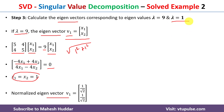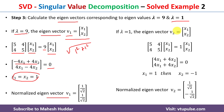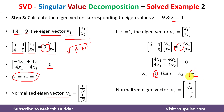For the second eigenvalue λ = 1, we follow the same process. Substituting λ = 1 and simplifying gives 4x1 + 4x2 = 0, so x1 = −x2. Setting x1 = 1, we get x2 = −1, giving the unnormalized eigenvector v2 = [1; −1]. Normalizing: the length is √(1² + (−1)²) = √2, so the normalized eigenvector v2 = [1/√2; −1/√2].